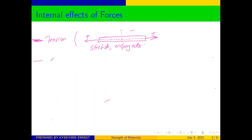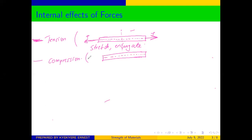The second effect we can talk about is compression. Compression is the opposite of tension. In tension, the forces were pointing away from the member when applied at the longitudinal side. In compression, the forces are pointing towards the member, causing the member to reduce in size — or the member is shortened by the application of the forces.